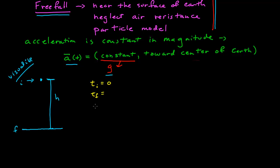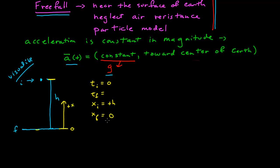Now I need to know the initial position. To do that, I need a coordinate system and a schematic. I need a zero for my coordinate system and a positive axis labeled something. I'm going to go positive x up. So my initial position is right here, and given this coordinate system, it's at a value of positive h. My final position, when it hits the ground and given this coordinate system, is at x equals zero.